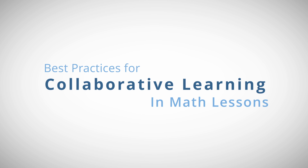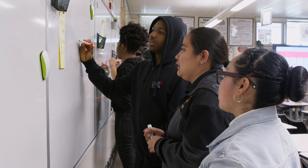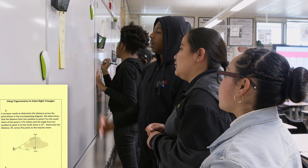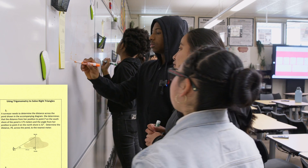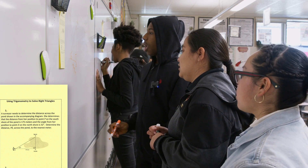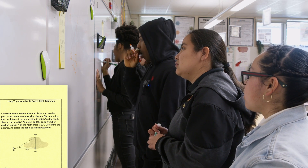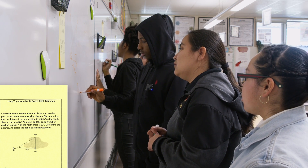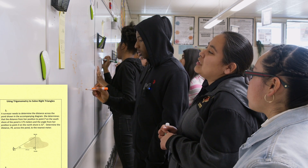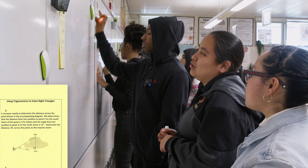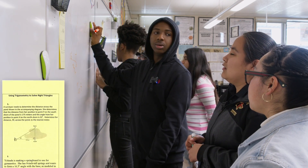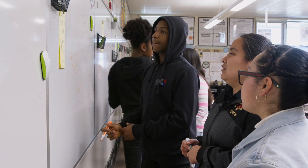We're trying to find the distance between P and X. This would be 175 and it would be tangent since there's something on the hypotenuse. What does it mean by 'nearest meter'? That we're going to round to a whole number.